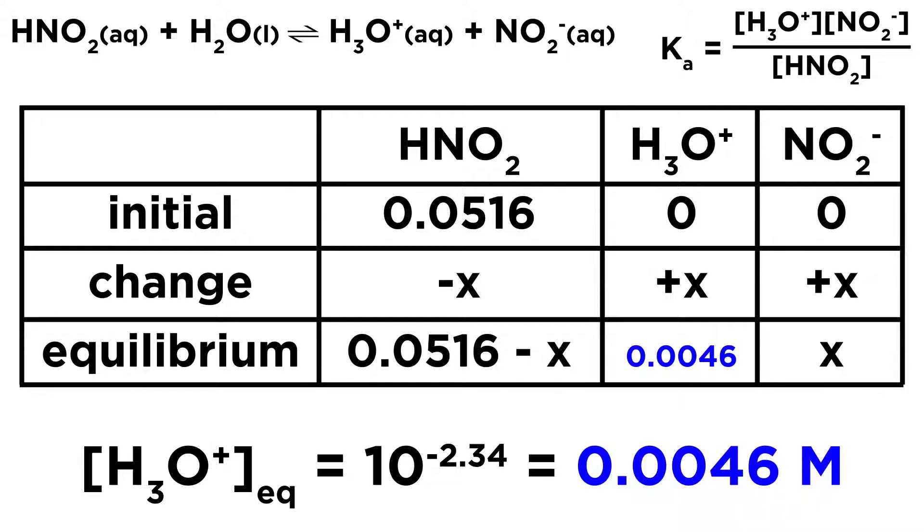That is just expressing the same value that the pH is expressing, just in a different way. So we can put 0.0046 in for the equilibrium value for hydronium. That is what we know based on the pH. So we can put that in the table. Now, we know that that was X, which means that 0.0046 equals X.